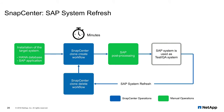These steps can be automated using SnapCenter. Within SnapCenter, there are two workflows used to execute the SAP System Refresh operation. The first workflow is the clone create workflow, which covers the three steps we discussed. SAP post-processing must then be executed as a manual operation or automated using third-party tools. When the next system refresh is executed, the clone delete workflow within SnapCenter needs to be executed, followed by another clone create workflow.